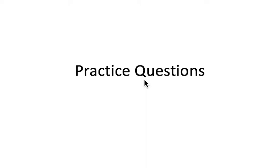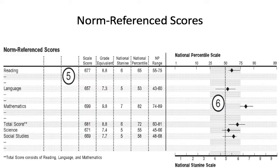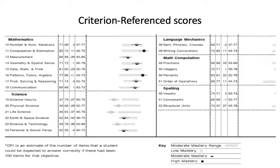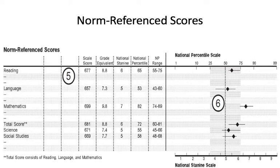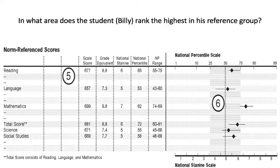As we've covered as much as we're going to cover in terms of content, I'm going to go through some practice questions. On the exam, a large part of the exam for standardized tests will involve looking at output like this. This is the norm reference stuff. This is the criterion reference stuff. I will give you another example and ask you questions about it. It will be your job to interpret those questions and the data correctly and give me the best answer. Here are some examples.